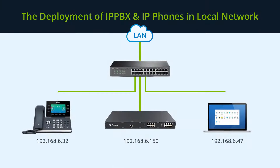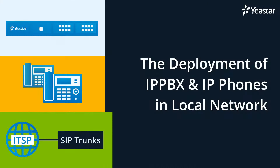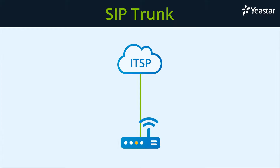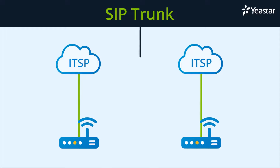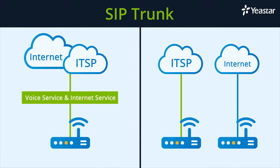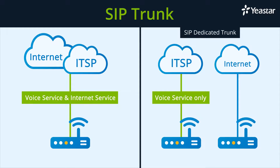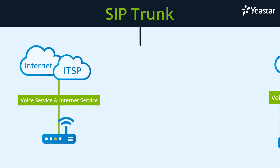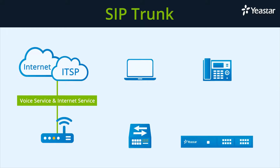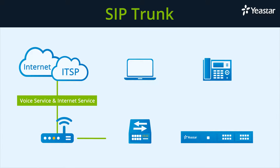Our PBX and IP phone have been deployed successfully. It is time for SIP trunk configuration. Here's the Ethernet cable of the SIP trunk provided by the service provider. Generally speaking, there are two types of SIP trunk: one provides voice services as well as internet service, while the other provides voice service only — also known as a SIP dedicated trunk. The way we deploy these two types is different. If the internet service also goes through the same Ethernet cable, connect the cable to the router directly. Since we have connected the PBX to the switch, the PBX will obtain both voice service and internet service through that cable, and other devices connected to the router will also be able to access the internet through it.